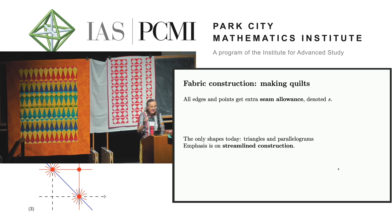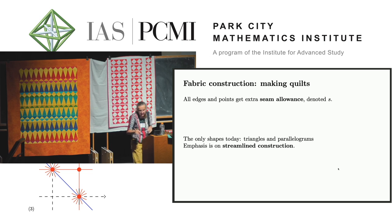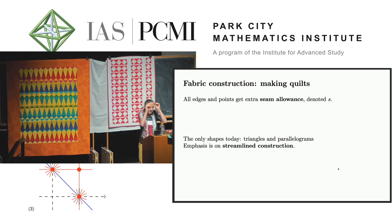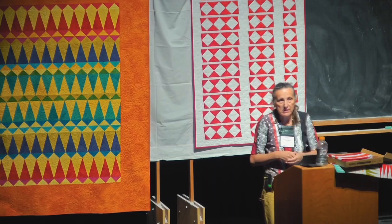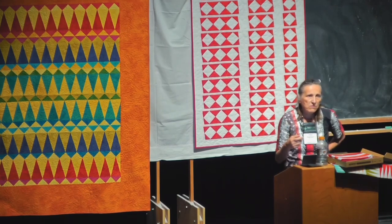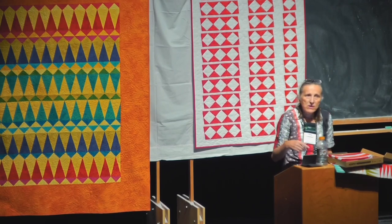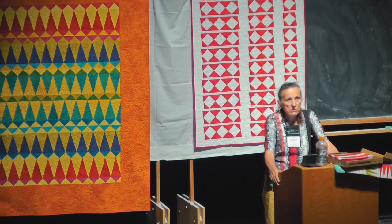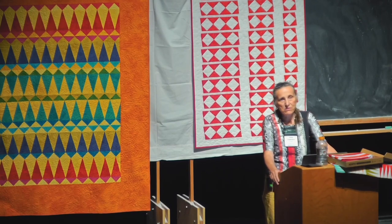In quilting, the standard traditional seam allowance is a quarter inch. For those of you in the metric world, that's about 7.5 millimeters. Quilting was really developed with immigrants in the USA, Canada, and Australia. Once they moved into the interior where there weren't any stores, they would use old clothing and old blankets, cut them apart, and make further blankets from them. In the US we still use inches; Canada and Australia are on the metric system, but most quilting rulers are in imperial units.